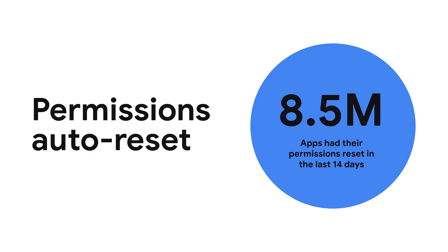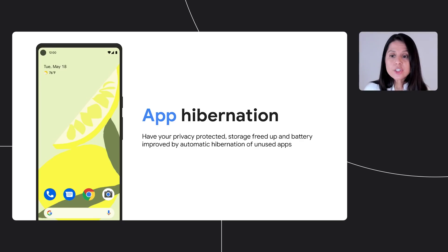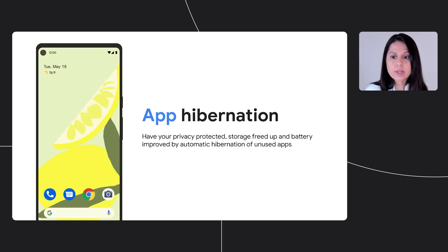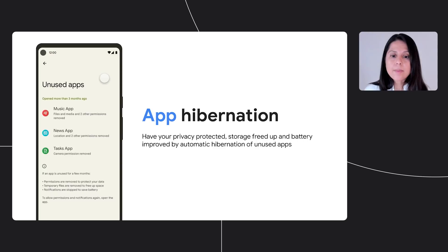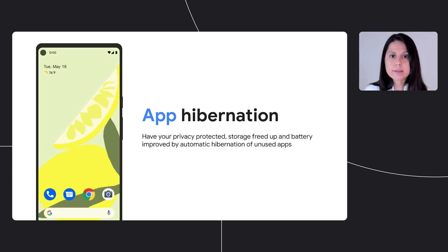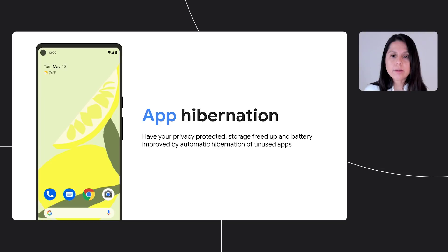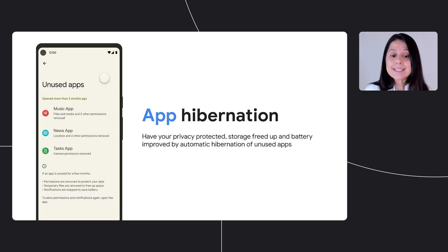Last year, we launched permissions auto-reset. If an app is not in use for an extended period of time, Android automatically revokes permissions for the app. Since the launch, permissions were reset for 8.5 million apps. This year, we're building on permissions auto-reset by intelligently hibernating apps that have gone unused for an extended period of time, optimizing for device storage, performance, and safety. The system not only revokes permissions granted previously by the user, but also force stops the app and reclaims memory, storage, and other temporary resources. In this state, the system also prevents apps from running jobs in the background or receiving push notifications. Users can bring apps out of hibernation by simply launching them. Similar to permissions auto-reset, the user will be prompted when an app has gone into hibernation and can disable hibernation in settings.